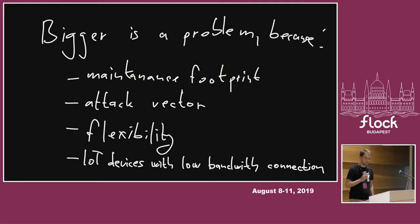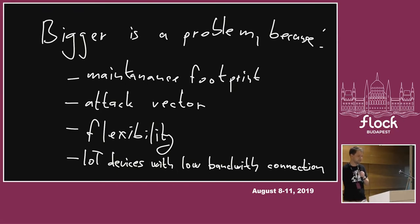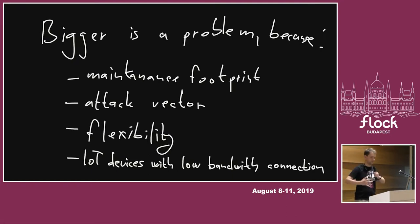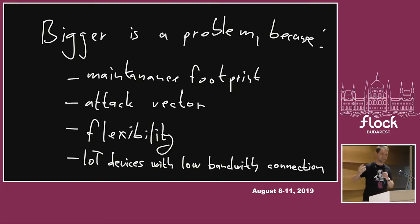I've identified four things: maintenance footprint — if there are more things, you need to maintain more things. The attack vector is also a concern because if there are many dependencies, there may be more vulnerabilities. It's less flexible because things can overlap. And I learned just today that some IoT devices with very low bandwidth connections — getting updates there might take time, so minimizing is also very relevant in that use case.